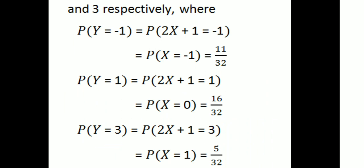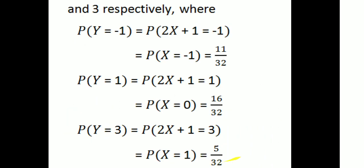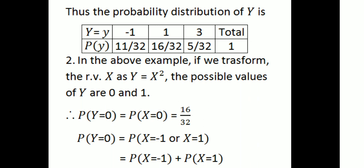For Y = 3: P(2X+1 = 3) means X = 1, so P(Y = 3) = P(X = 1) = 5/32. Thus we have the probability distribution of Y: Y takes values minus 1, 1, 3 with corresponding probabilities 11/32, 16/32, and 5/32. The total probability 11/32 + 16/32 + 5/32 equals 1.